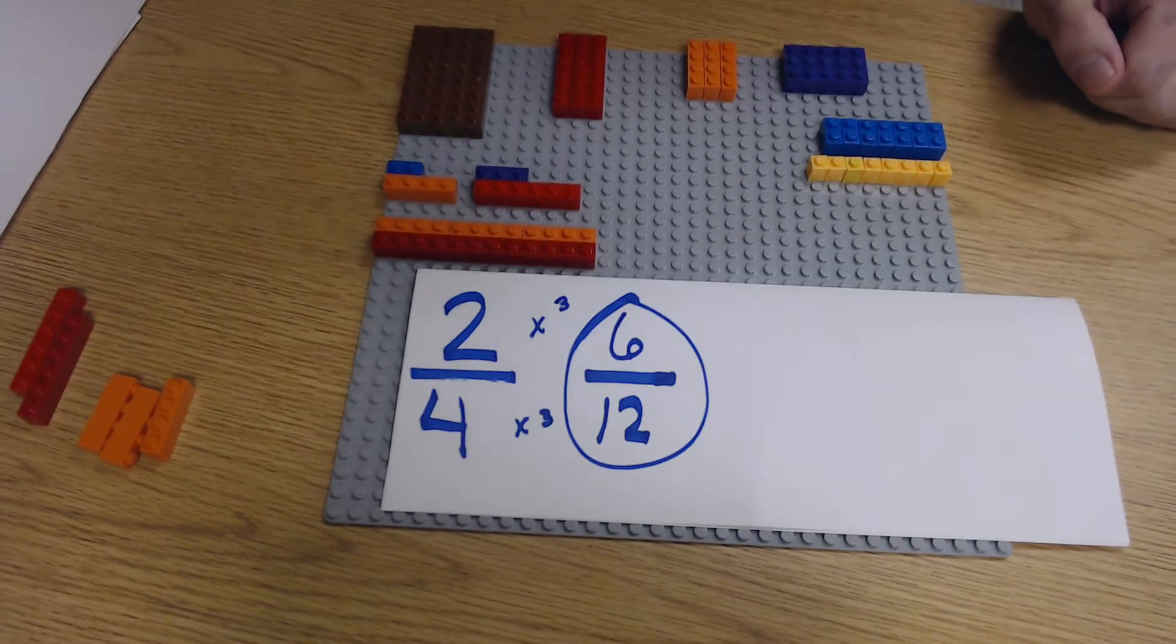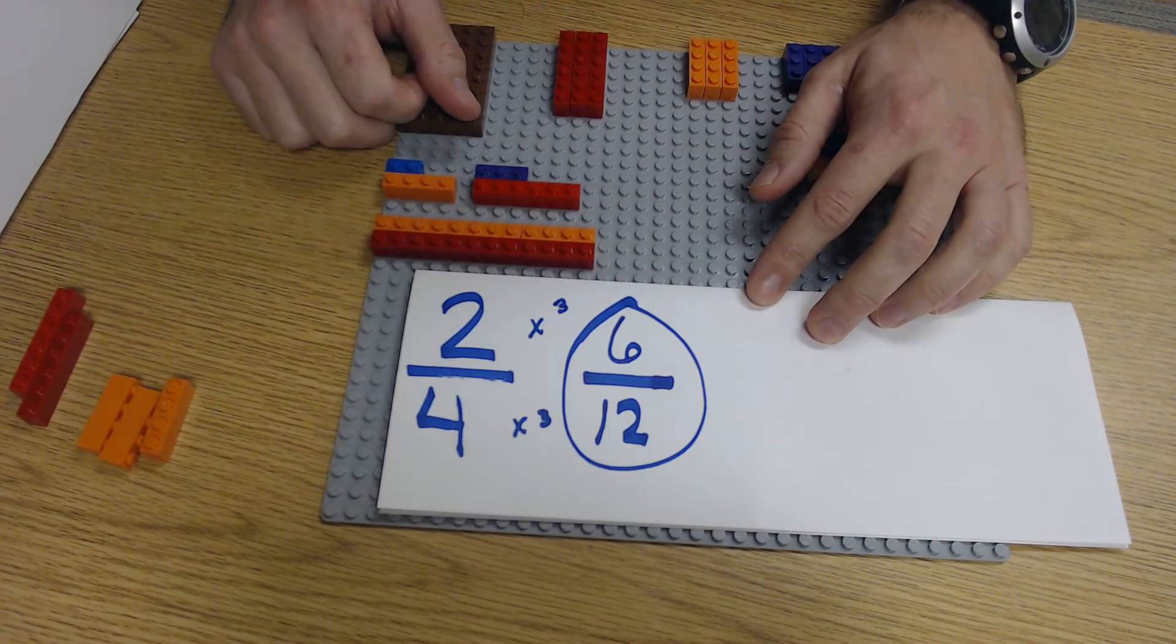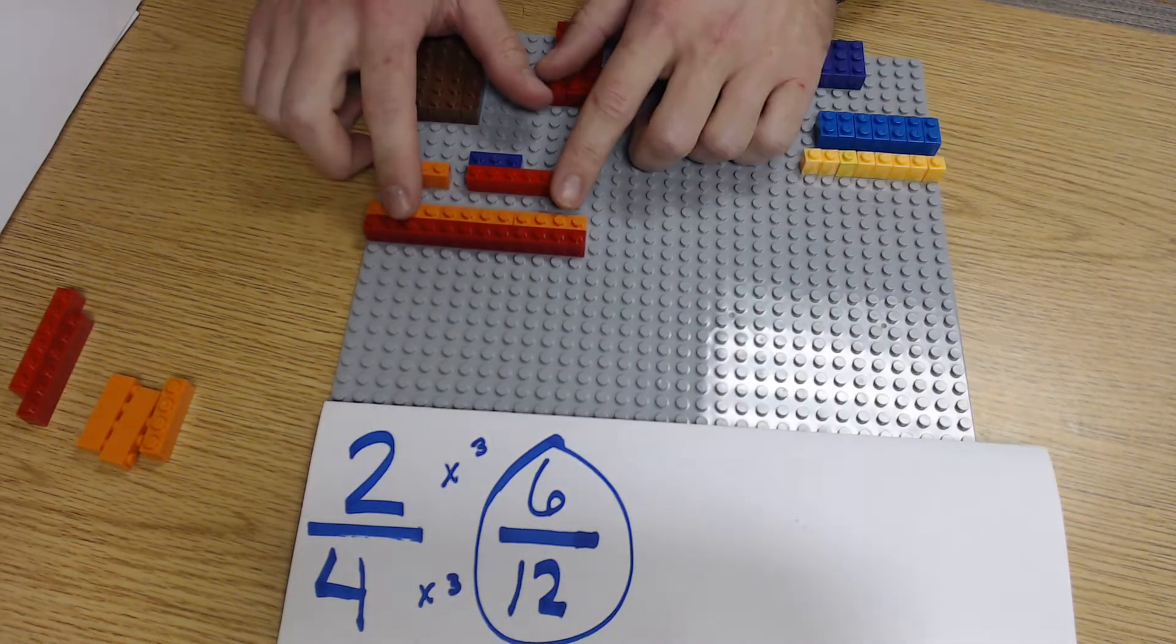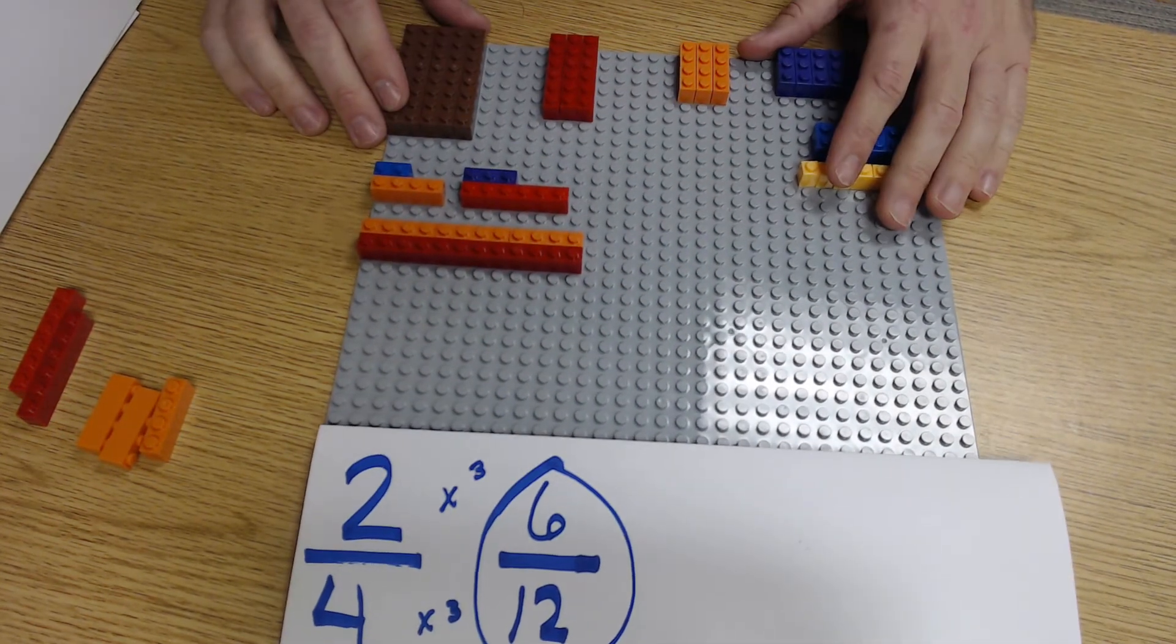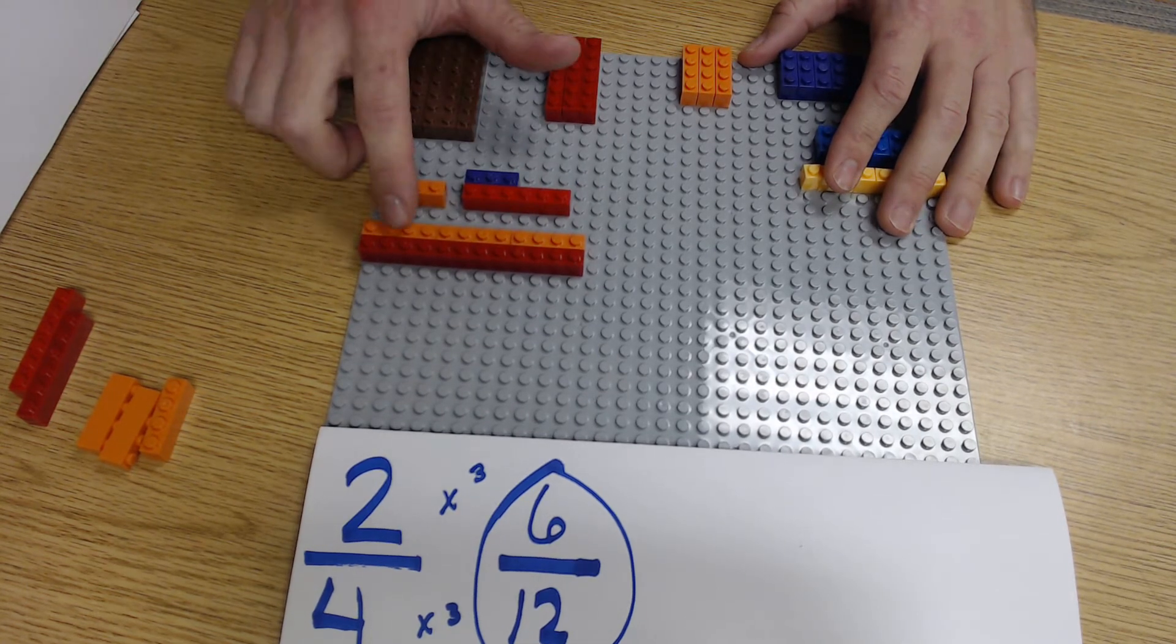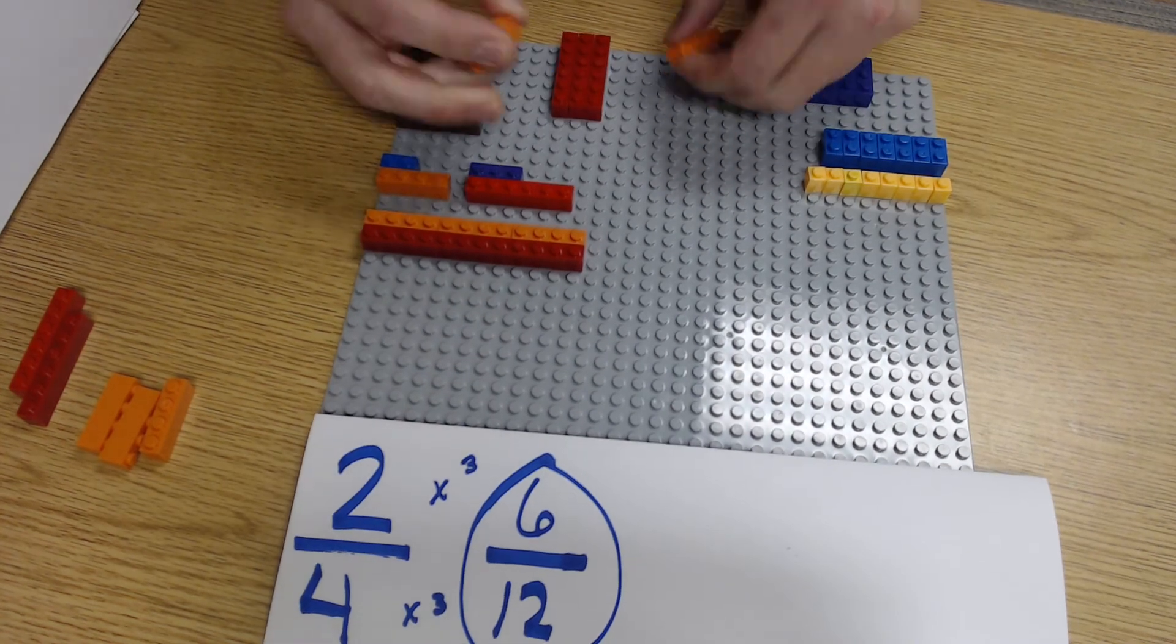Now that brings us to our next trick. How do I take my two-fourths and turn it into six twelfths? Well, we just found out that 12 is our common denominator. How many fourths did it take to get to 12? Well, it took one, two, three. So I'm going to build out that fraction right here.